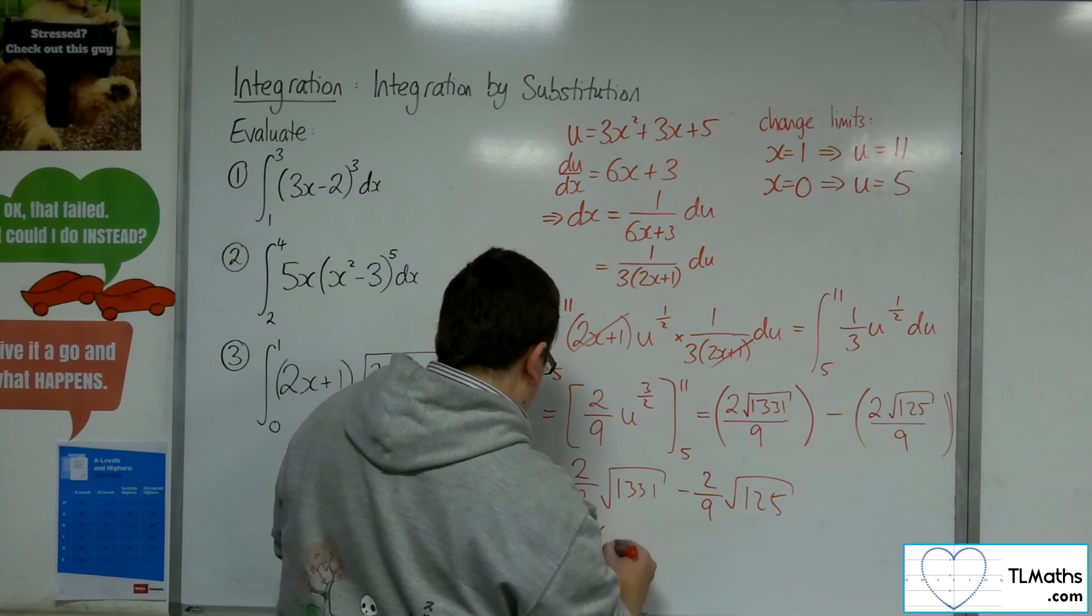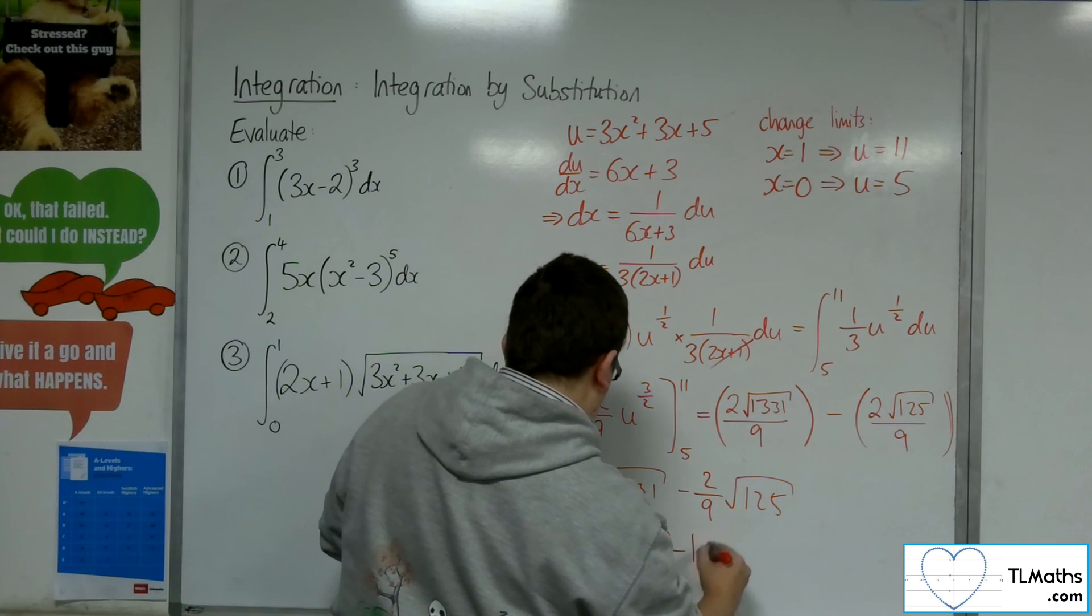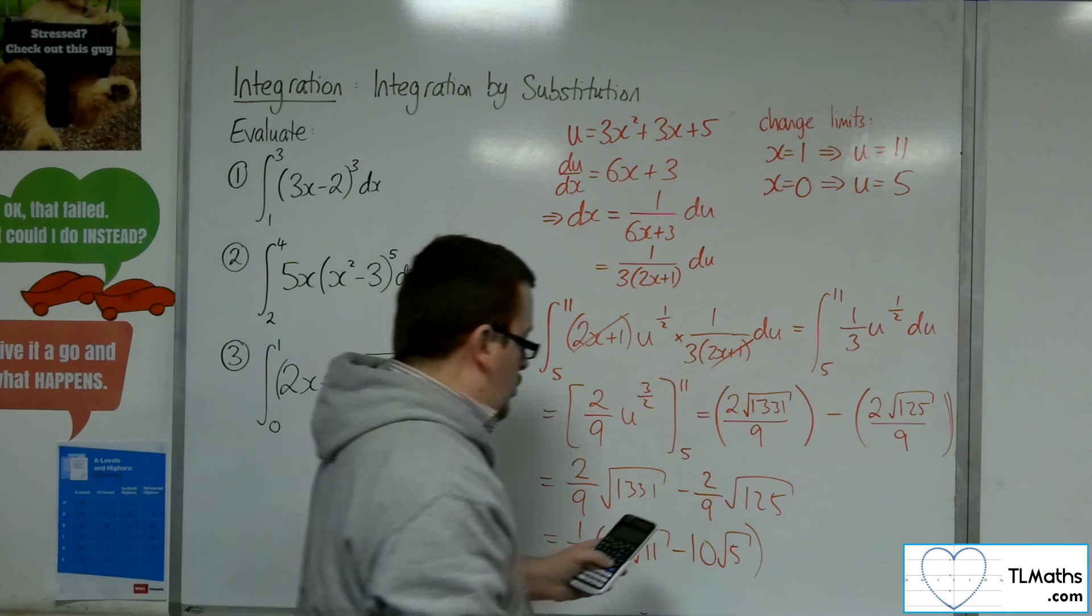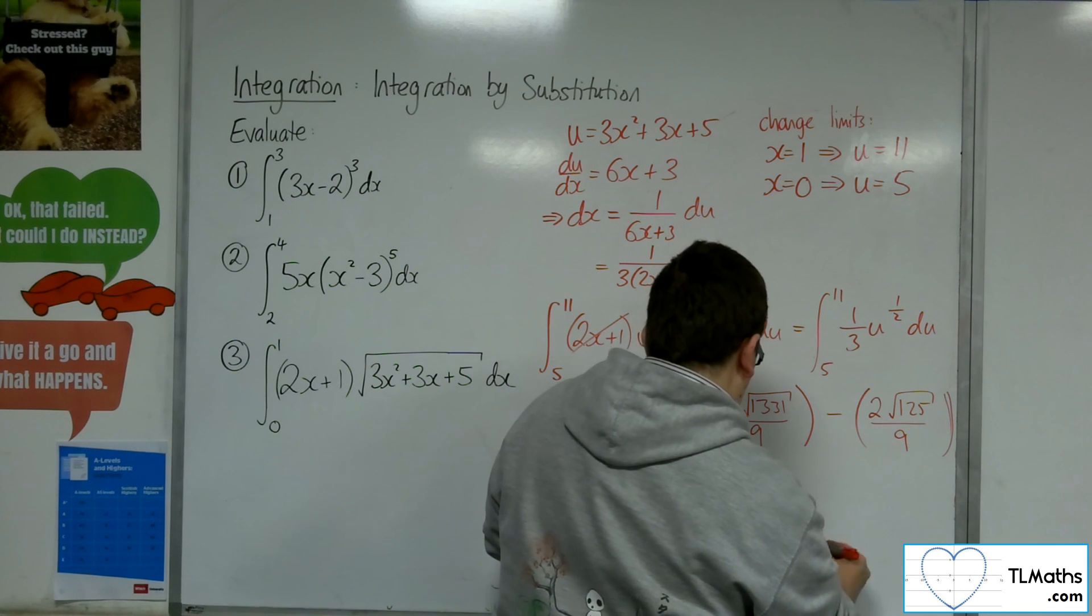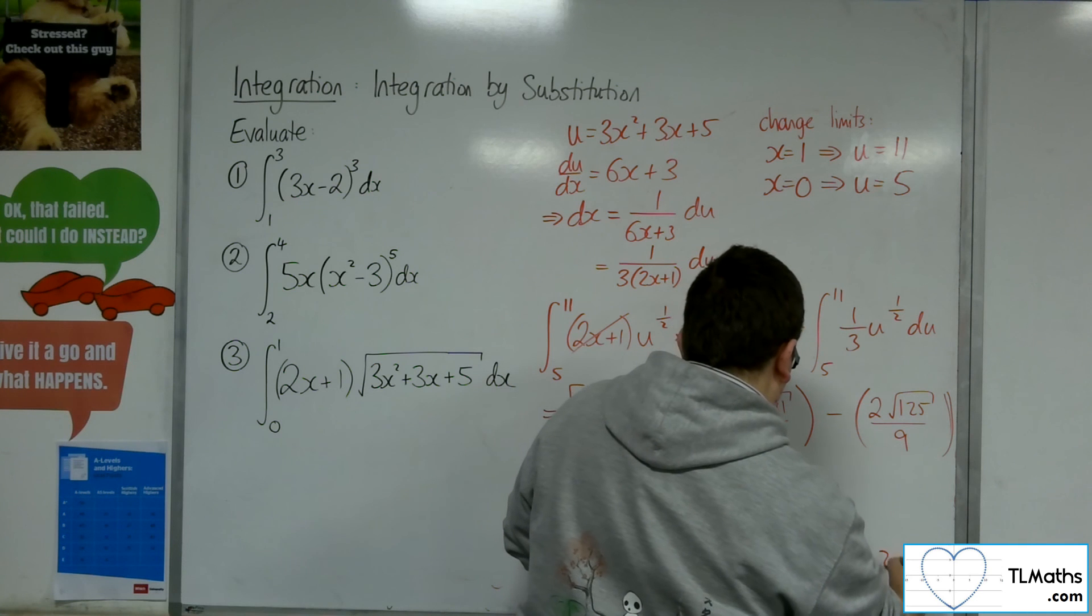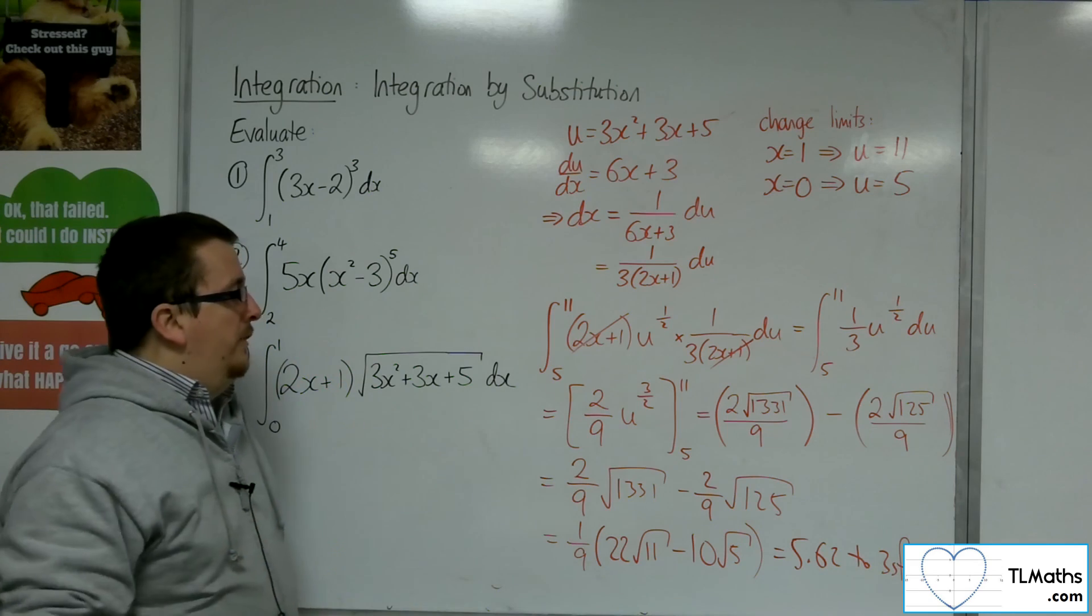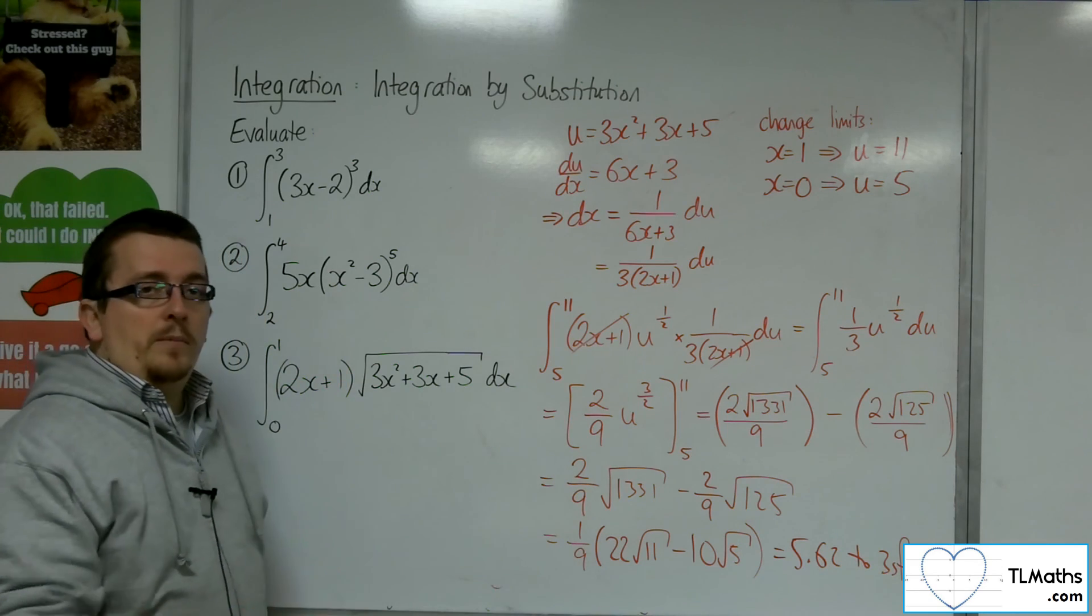22 root 11 take 10 root 5, which is 5.62 to 3 significant figures. So that is the answer to number 3.